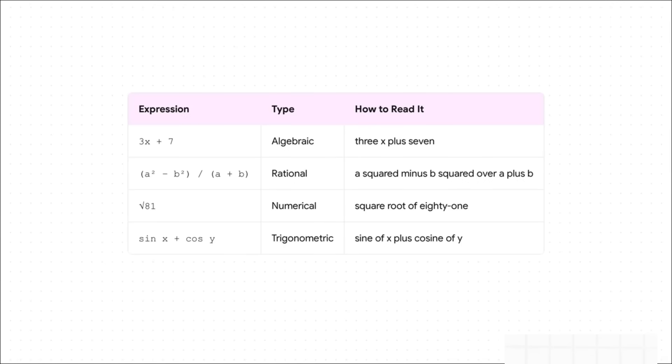And this idea applies to all kinds of expressions. Let's look at a few. You see three x plus seven. That's an algebraic expression. It represents a number. But which number? We don't know until we know what our pronoun, x, is. Now this next one, a squared minus b squared over a plus b looks kind of scary, right? But it's still just one single value. It's a rational expression. Same thing for the square root of 81. It's just a different name for the number nine. See? None of these are making a claim. They're just naming a mathematical thing.